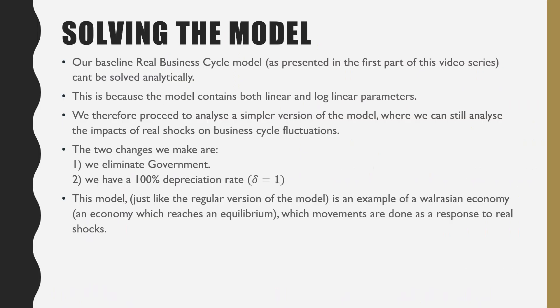Our baseline real business cycle model as presented in the first part of this video series can't be solved analytically. This is because the model contains both linear and log linear parameters. We therefore proceed to analyze a much simpler version of the model where we can still analyze the impact of the real shocks on business cycle fluctuations. The two changes that we're going to make in this modified version are that we're going to eliminate government from our analysis and we're going to assume a 100% depreciation rate.